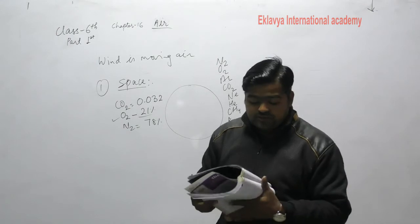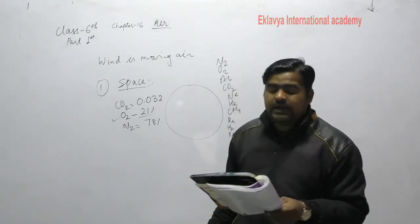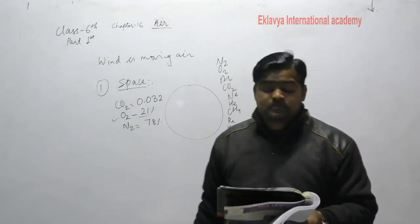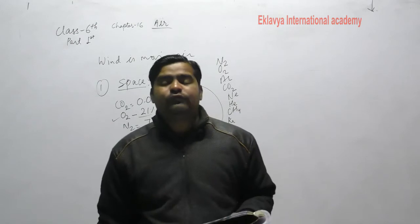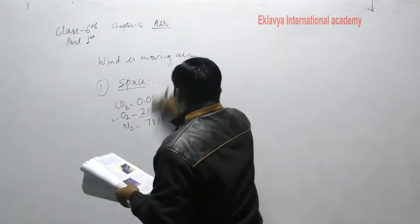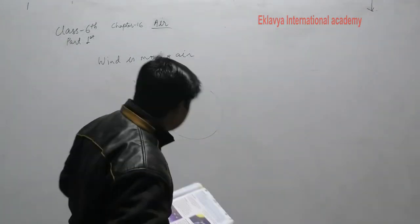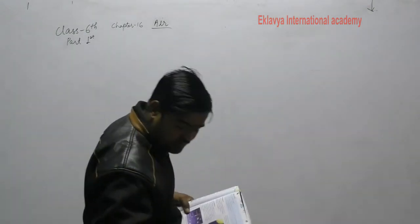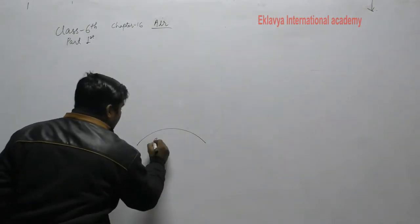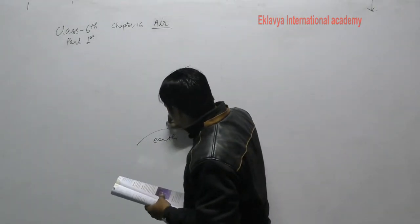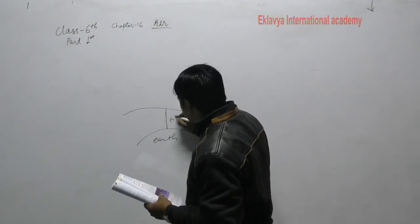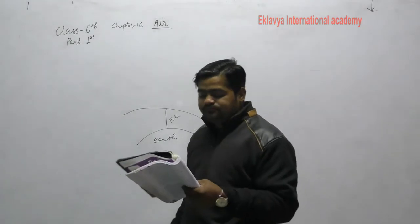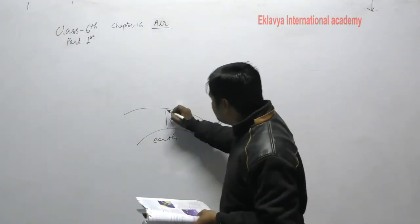The atmosphere is divided into five layers: troposphere, stratosphere, mesosphere, thermosphere, and exosphere. The first layer is the troposphere, extending approximately up to 15 kilometers from the Earth's surface.